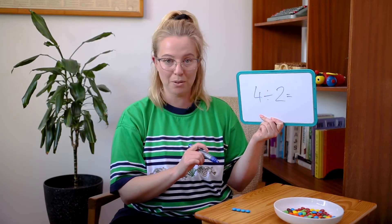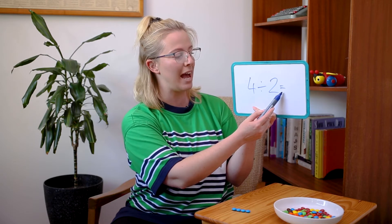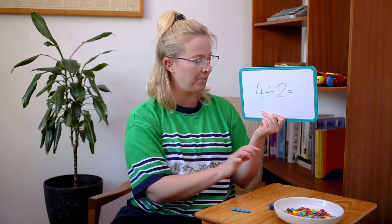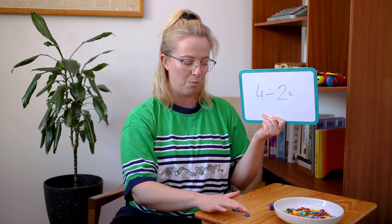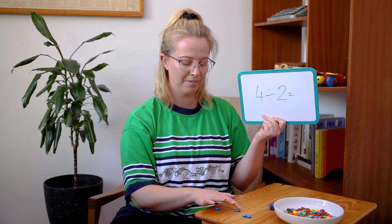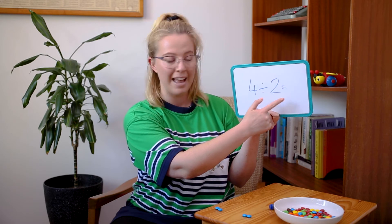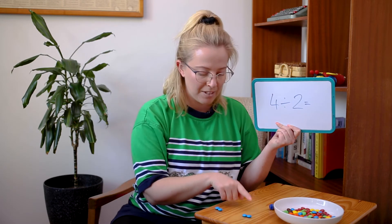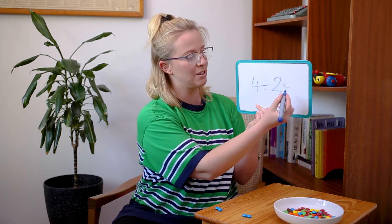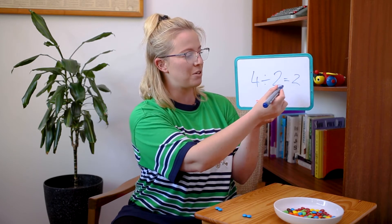Our next equation is four M&Ms shared between two people or two groups — so how many will each group have? Let's use these four to divide up, one by one: one for that person, one for this person, one for that person, one for this person. I've had four M&Ms and shared it between two groups. How many are in each group? This person has two and this person has two, so our answer is two. Four divided by two equals two.